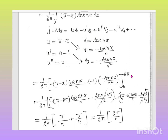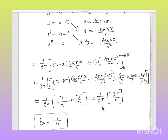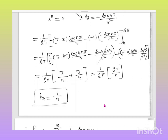Applying limits: (1/2π)[-(π - 2π)(cos 2nπ/n) - (sin 2nπ/n²)] - [-(π)(cos 0/n) - (sin 0/n²)]. Since cos 2nπ = 1, sin 2nπ = 0, cos 0 = 1, sin 0 = 0: (1/2π)[π/n + π/n] = (1/2π)(2π/n) = 1/n. So bₙ = 1/n.